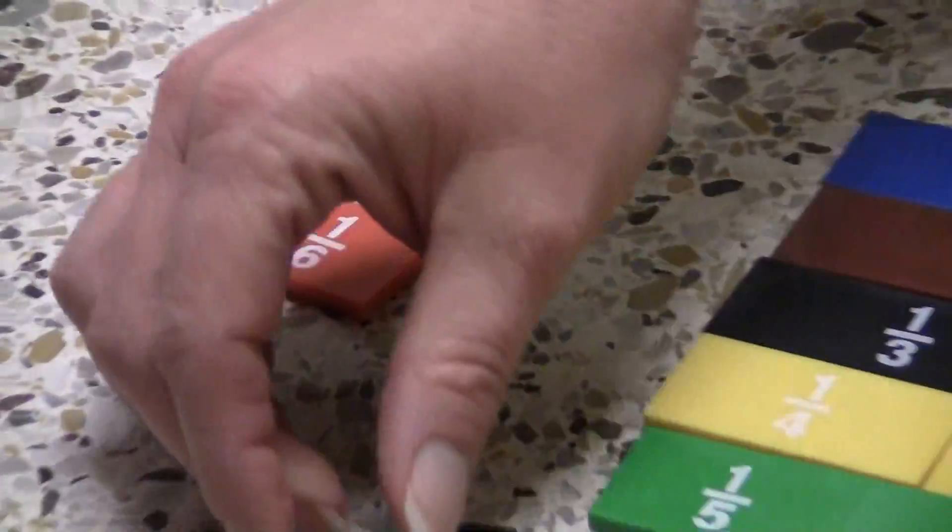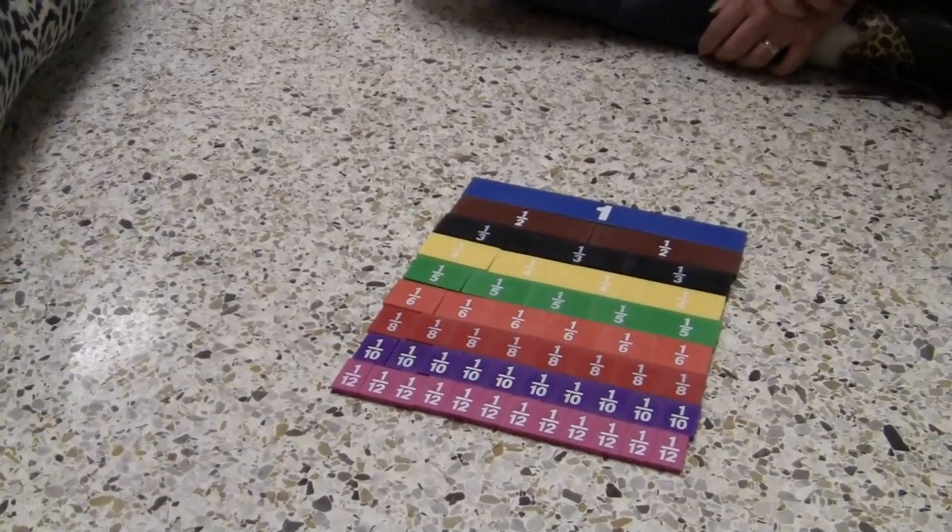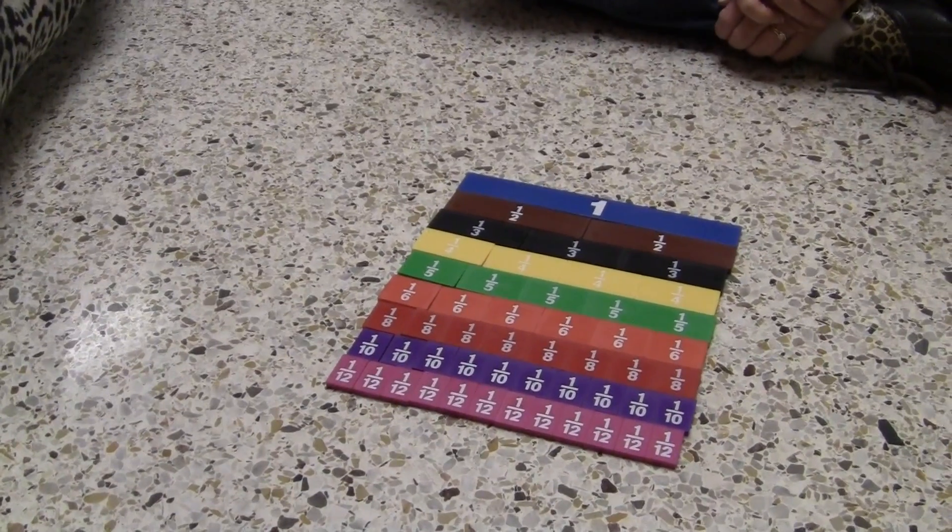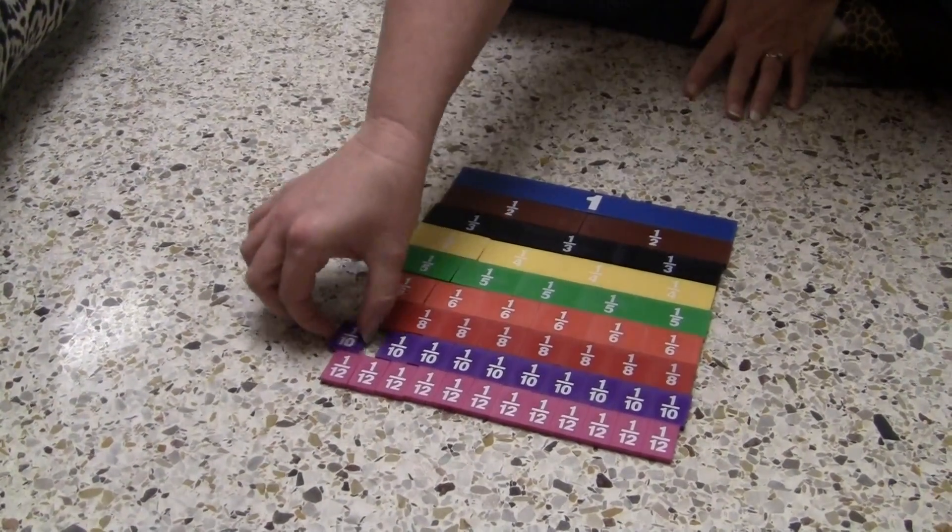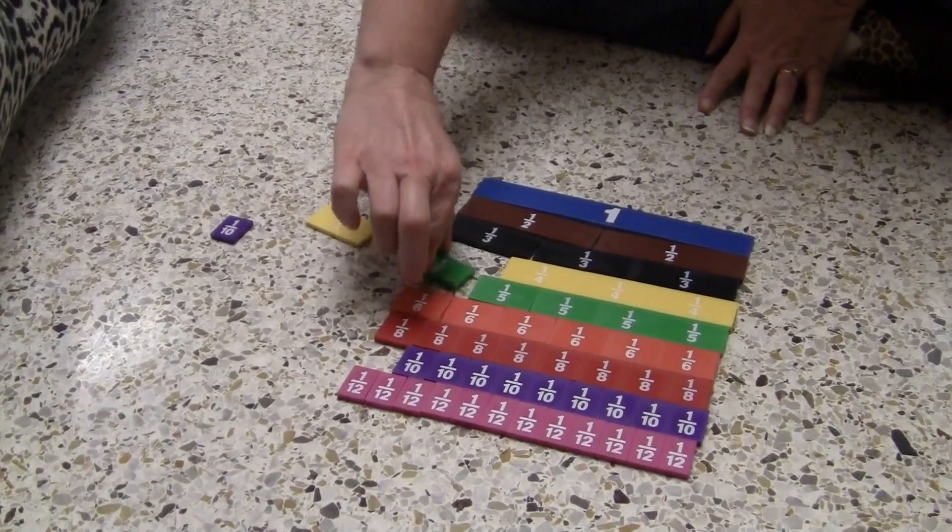After students have grasped the concept of just two fractions, you can move on to three or more. You can give students the fractions one-tenth, one-fourth, and one-fifth and ask them to place them from least to greatest.